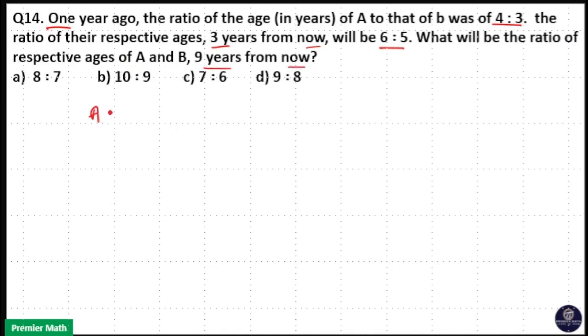So we have A and B here. One year ago, ratio of their ages was 4 is to 3. After 3 years from present, their ratios of ages will be 6 is to 5.